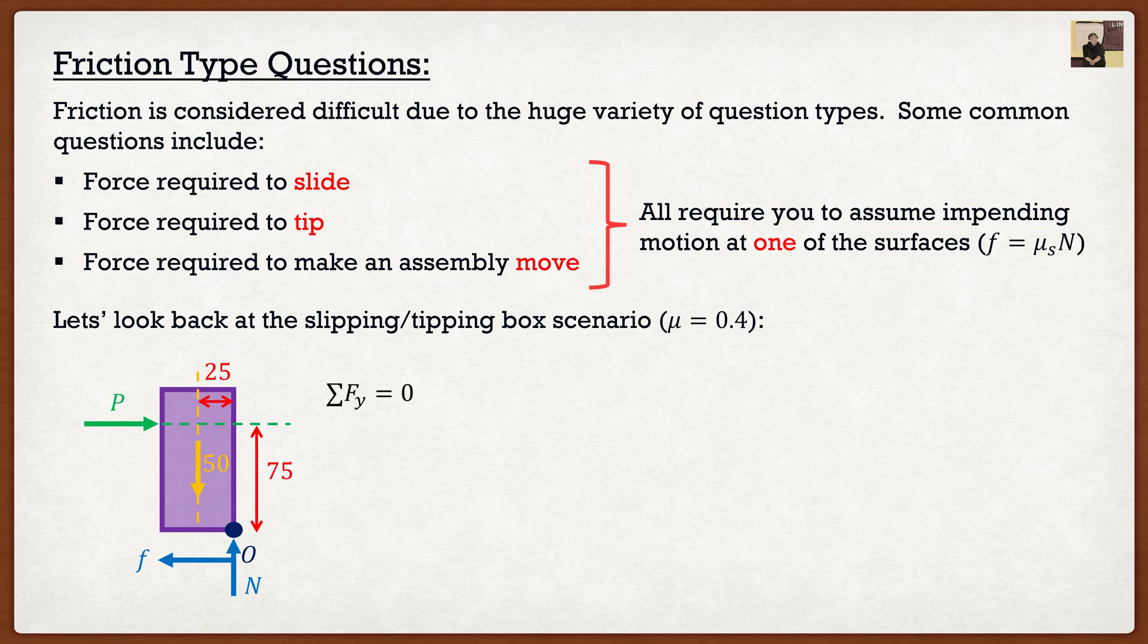If I were to go summation of forces in the y, well there's only two forces in the y direction. We have our normal force pointing upwards and we have our weight coming downwards. So we can say our normal force is equal to our weight, which is just equal to 50. So this would be kilonewtons, pounds, whatever units you're given.